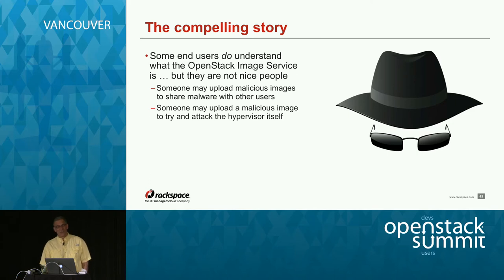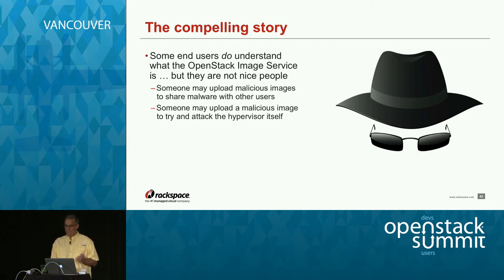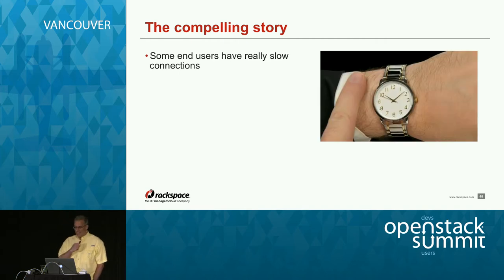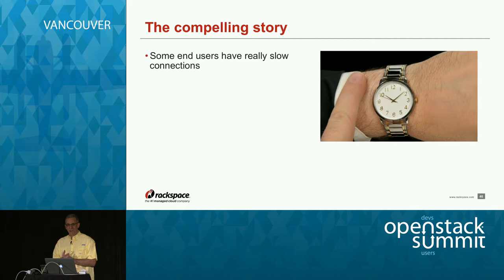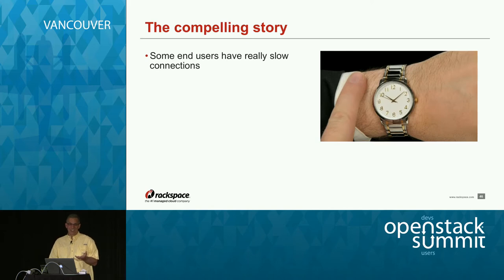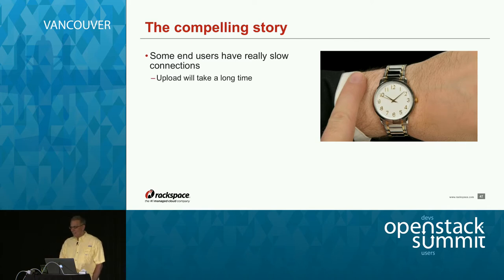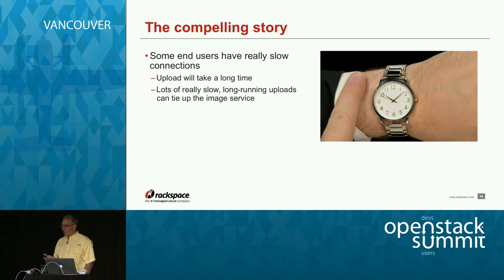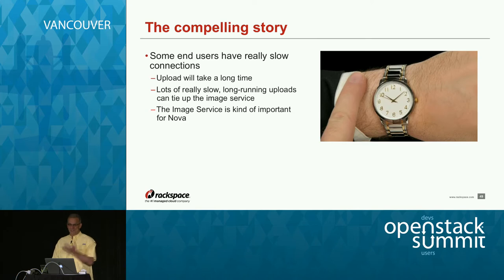Someone might upload malicious images and then share them to other users, hoping to put back doors in them or do some other nasty stuff. Somebody might upload a malicious image that could try to attack the hypervisor, which is possible. Another complication is some end users have really slow connections. Our base images at Rackspace are on the order of 7.5 GB for Linux, 12 GB for Windows with SQL Server, and the average snapshot is around 35 GB.